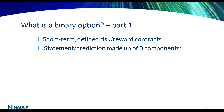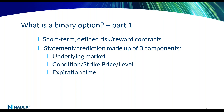Every binary option contract has three components: an underlying market, a condition, and a time. That condition is sometimes called a strike price or a level. We have binary options for equity indices, foreign exchange, commodities, and even event contracts around economic numbers. So we've got a variety of different choices in our binary options.